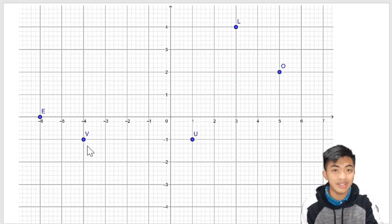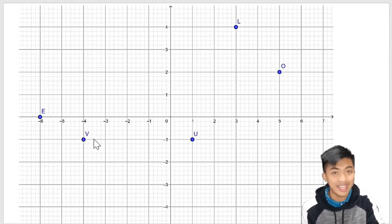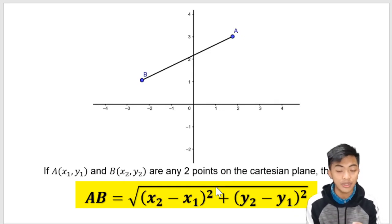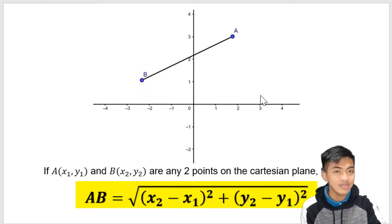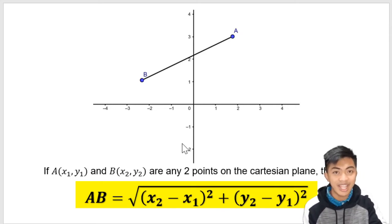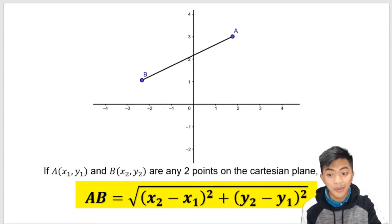What could be the answer? We also have point E and point V — what is the distance between them? We cannot really count, that's why we have the distance formula. This formula is used to find the distance between any given points. So let's say we have point A and point B and you're asked to determine the distance — you can simply substitute the coordinates of the points into the formula.